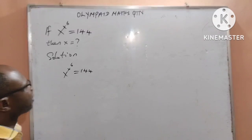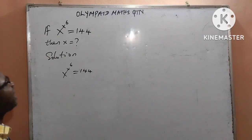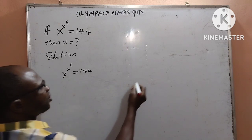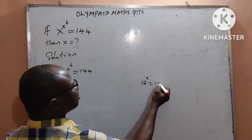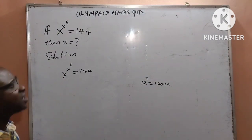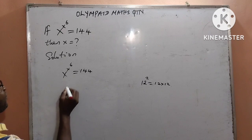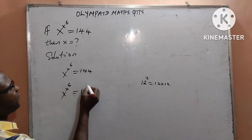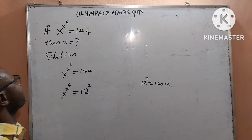The first thing I will do, I will start by the right-hand side. I will write 144 in index form. We know that 144 is 12 to the power of 2, which means 12 times 12. Therefore, I can write x to the power of x to the power of 6, equal to 12 to the power of 2, which is equal to 144.